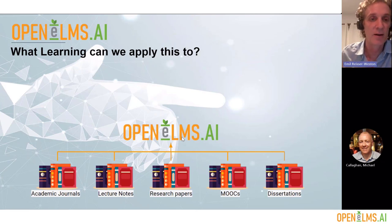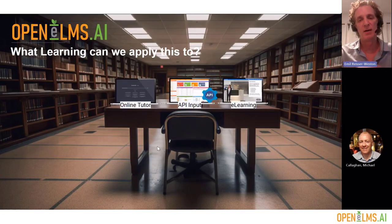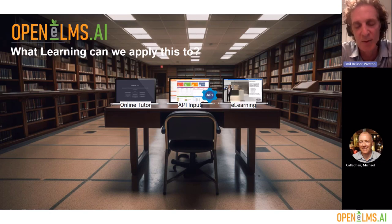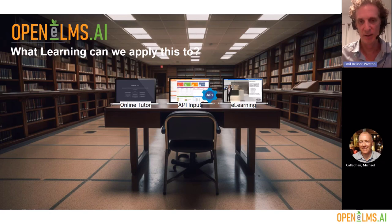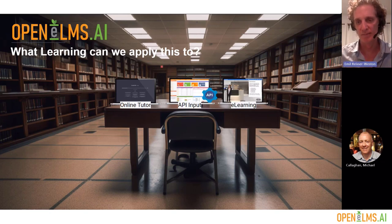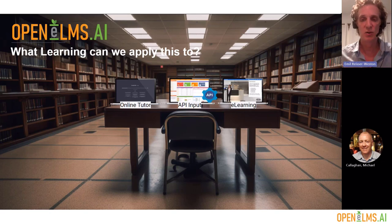We have our knowledge and our AI engine. What learning can we apply this to? OpenElms AI has a number of different options — they're limitless, but they can be categorized in three ways. First, there's an online tutor: you can use the AI to power your own bespoke online tutor dealing with your own university topics. Second, you have an API input, which empowers data management systems and lets you sell to third-party organizations to power their knowledge management systems. Third — and probably the most unique — is that we can produce e-learning from a single prompt using your knowledge.